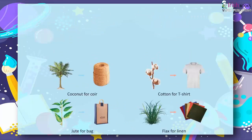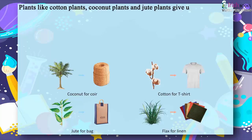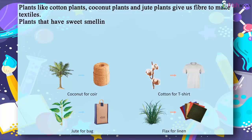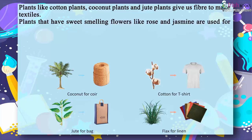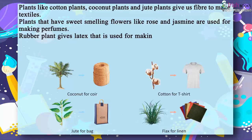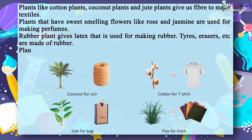Plants like cotton, coconut and jute give us fibre to make textiles. Plants that have sweet-smelling flowers like rose and jasmine are used for making perfumes. Rubber plant gives latex that is used for making rubber. Tyres, erasers, etc. are made of rubber. Plants also provide us timber to make furniture, paper and gum.